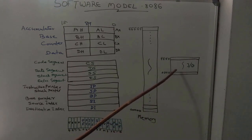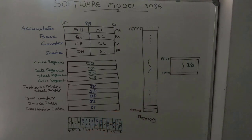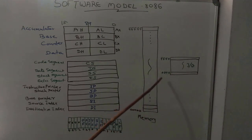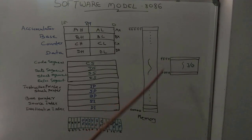This is the IO address space. 8086 can support memory-mapped IO and peripheral IO. Peripheral IO uses a 16-bit address ranging from 0000 to FFFF.